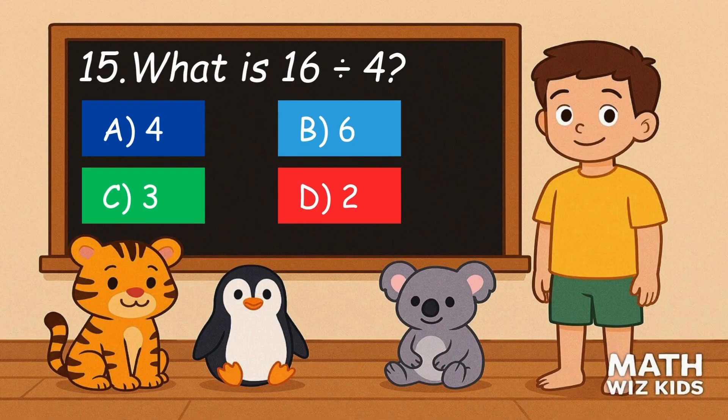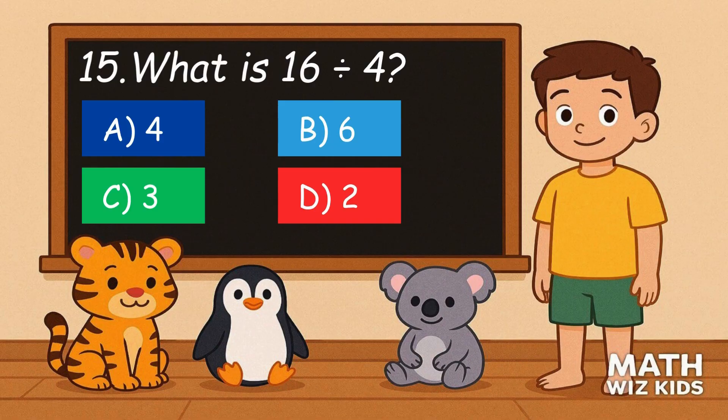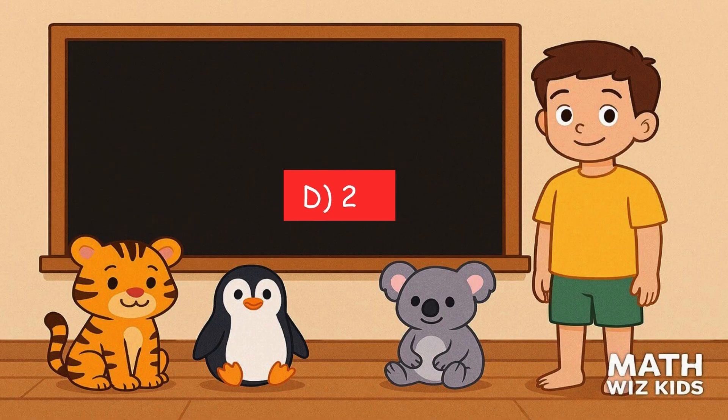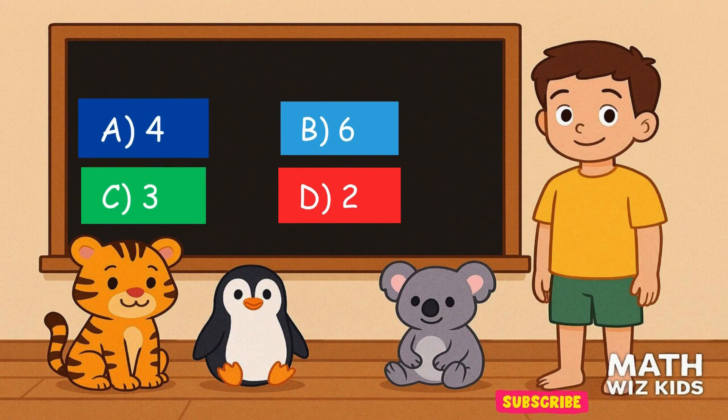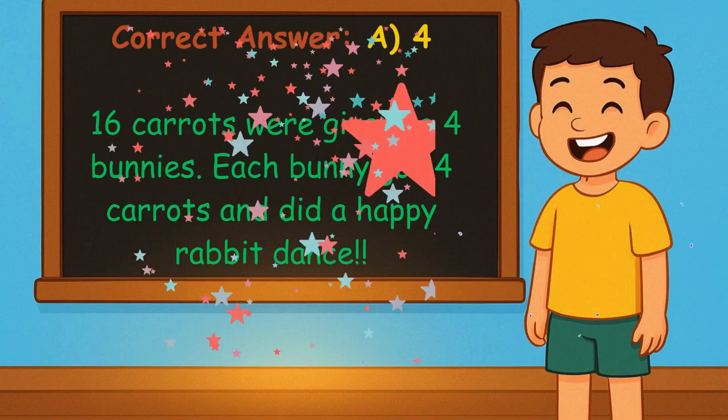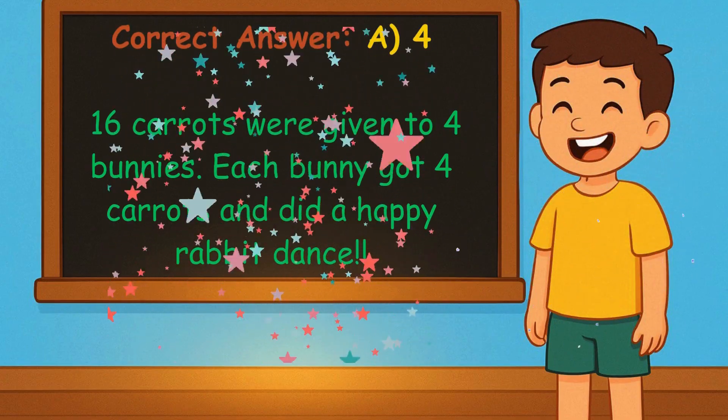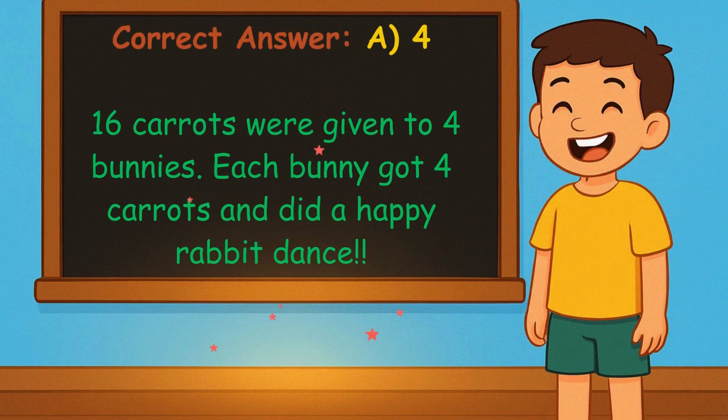15. What is 16 divided by 4? Is it A, 4, B, 6, C, 3, or D, 2? Correct answer is 4. 16 carrots were given to 4 bunnies. Each bunny got 4 carrots and did a happy rabbit dance.